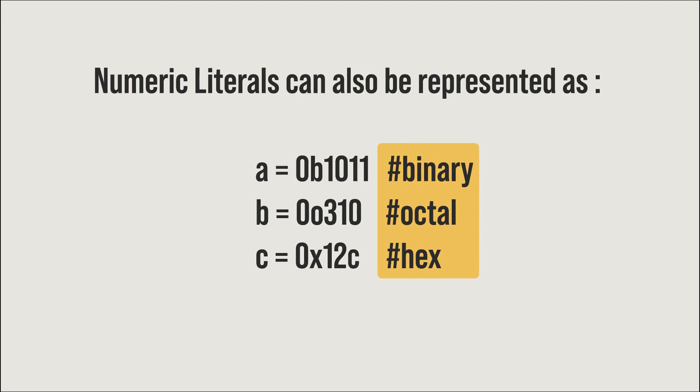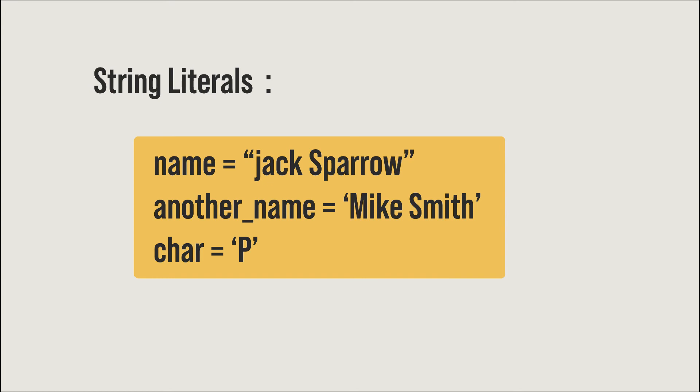Numeric literals can also be represented as binary, octal, and hex. To represent binary, assign a equals 0b1011 — where 'b' stands for binary — and 0b1011 stands for 11. For octal, b equals 0o310 — where 'o' stands for octal — which stands for 200. For hex, c equals 0x12C — where 'x' stands for hex — which stands for 300. In this way we can represent binary, octal, and hex and assign them to a variable.